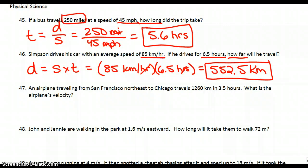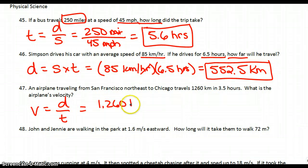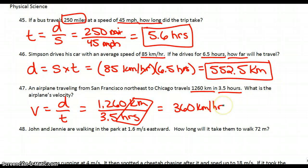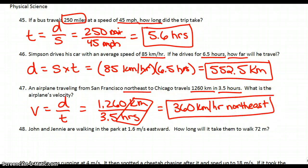47: an airplane traveling from San Francisco to Chicago travels 1260 kilometers in three and a half hours. What is the airplane's velocity? Remember, velocity is a speed in a given direction, so we use the same formula — distance over time. Distance is 1260 kilometers and time is three and a half hours, giving us 360. Units are kilometers per hour. Since it's a velocity, we need to include direction, which is northeast. Final answer: 360 kilometers per hour northeast.